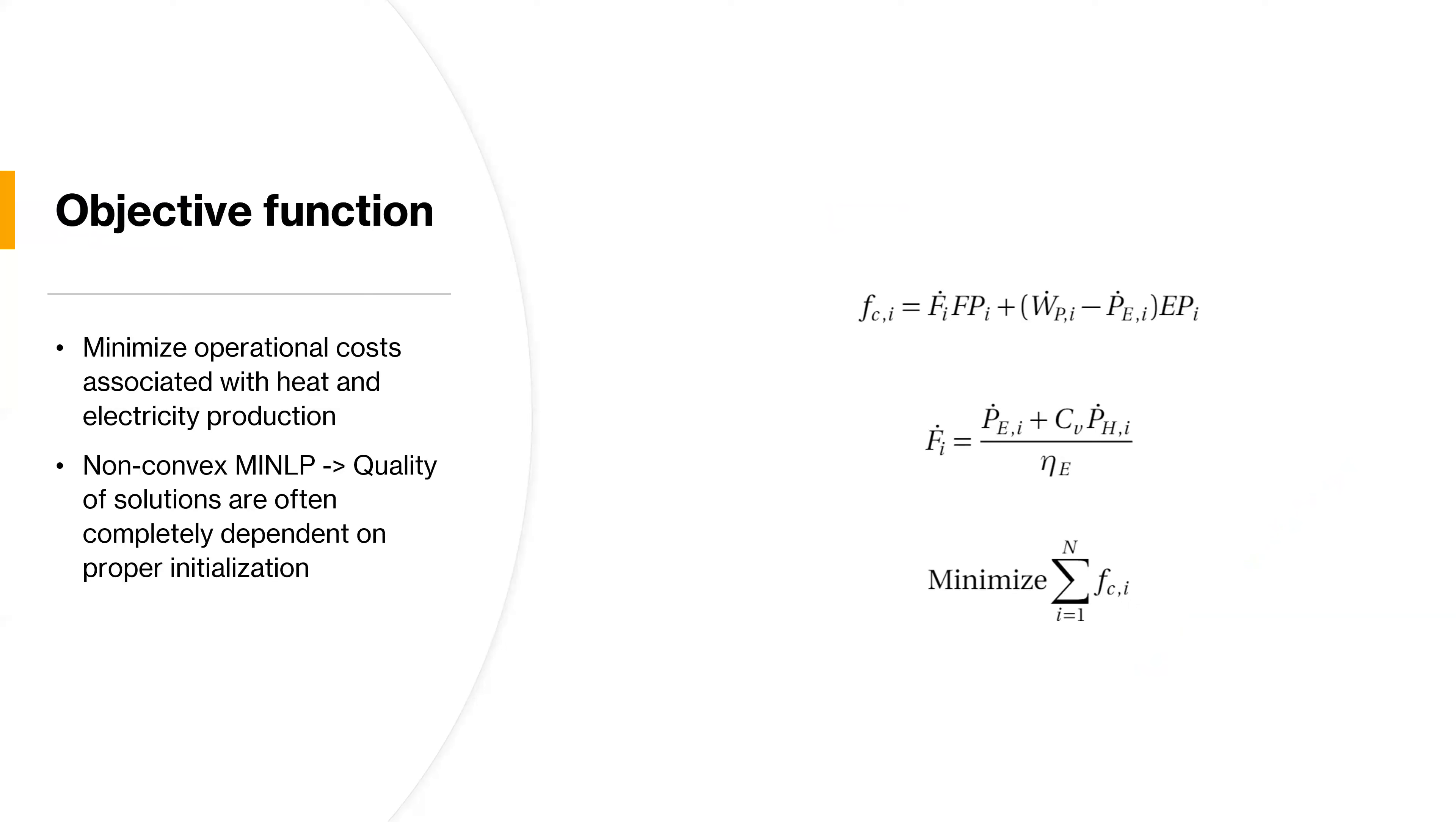So overall, the objective function of this optimization problem is consisting of some fuel costs, and some electricity, or some monetary gains from selling electricity to the grid, where we also pay for buying electricity to our pump, driving the transmission mass flow. And the fuel is, of course, dependent on the electricity production and the heat production. The overall cost is then given as the sum of the hourly cost across all the hours that we are scheduling.